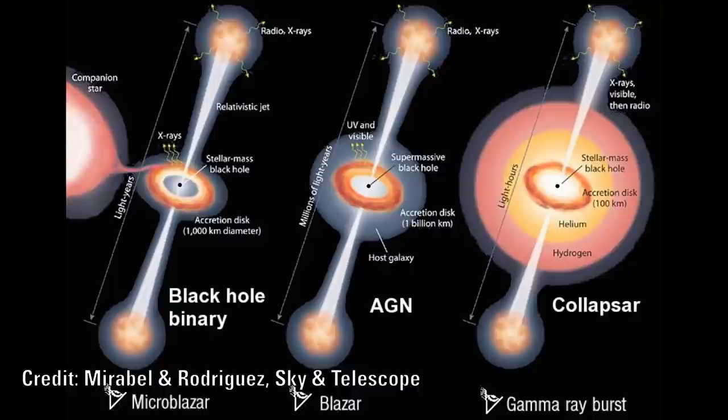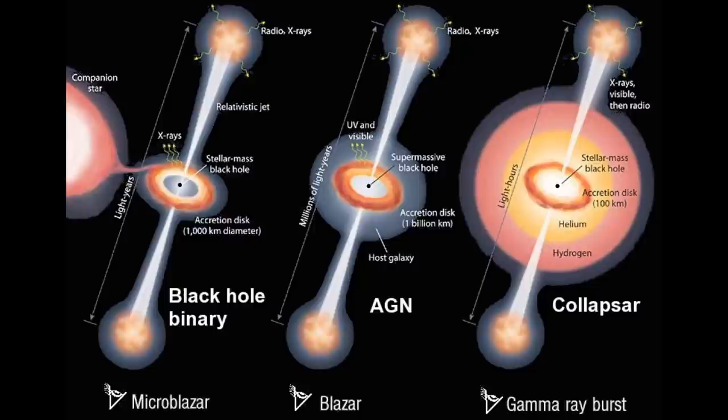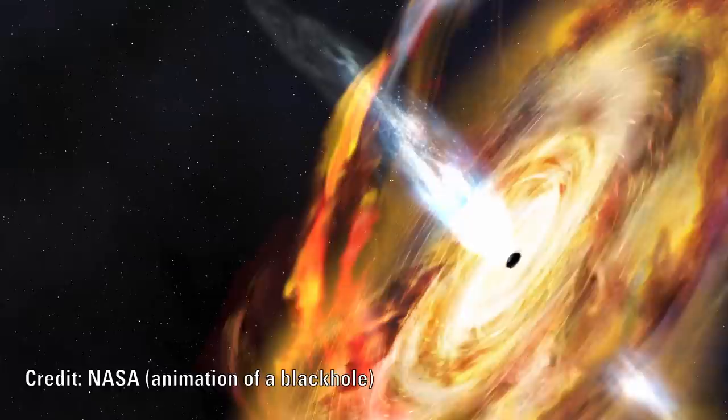So how do they explain this then? They speculate that there could be a mismatch, meaning that the more distant blazars have different properties compared to the more local ones and this could mean that the jets may be moving slower.